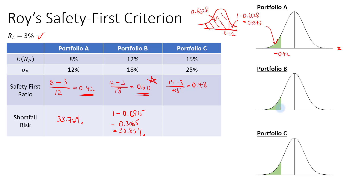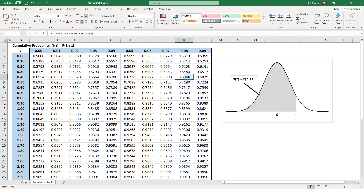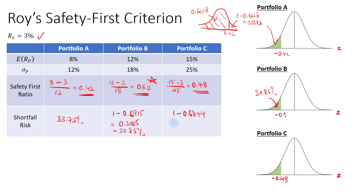For Portfolio B, the Z-score is negative 0.5 on the normal distribution, with a shortfall risk of 30.85%. For Portfolio C, the Z-score is negative 0.48, and looking up 0.48 gives a cumulative probability of 0.6844, so the shortfall risk is 1 minus 0.6844, equal to 0.3156 or 31.56%. Comparing all three, Portfolio B has the lowest shortfall risk, confirming it as the safety first optimal portfolio. Portfolio A has the highest shortfall risk at 33.72%. This concludes the video on Roy's Safety First Criterion.